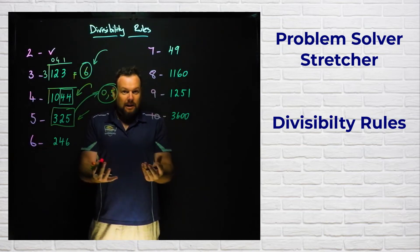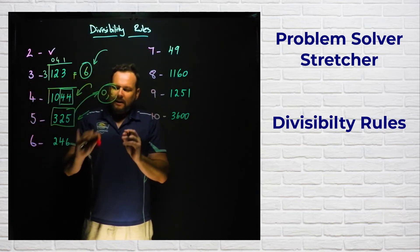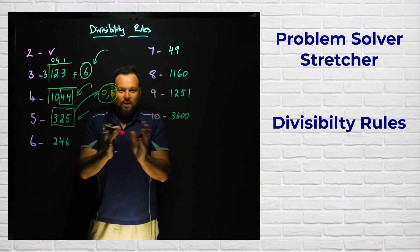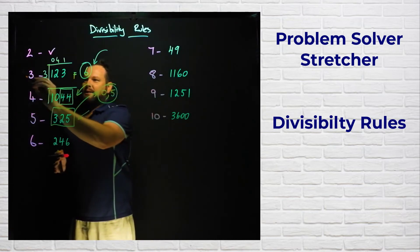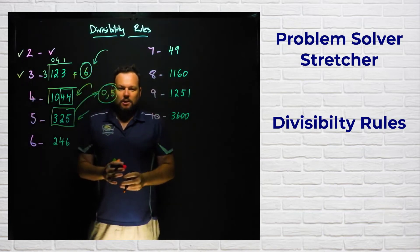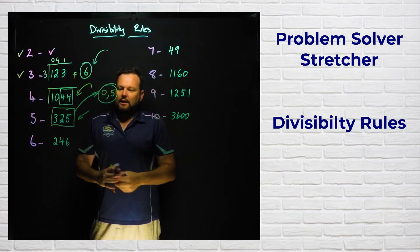Six, another easy one. If a number is divisible by six, the only thing that it needs to do is to pass these two divisibility tests. So if you can divide it by two and three, that means you can also divide it by six.